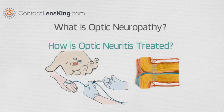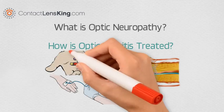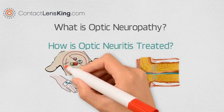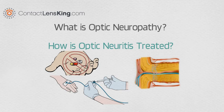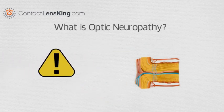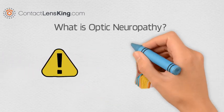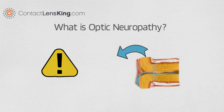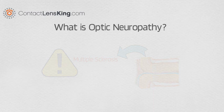How is optic neuritis treated? Some treatments may include a regimen of IV and oral steroids; however, the use of oral steroids on its own is not recommended. It is important to note that sometimes optic neuritis can be a precursor to the development of MS.